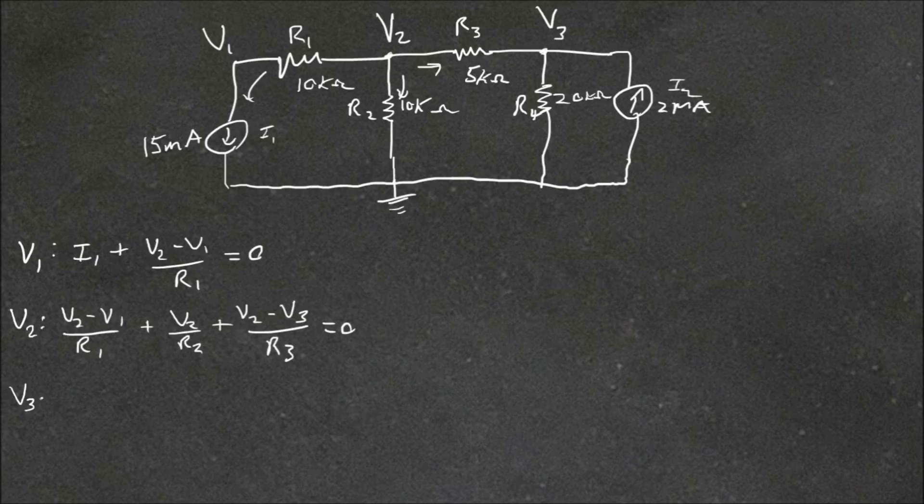And for our final node, V3, the KCL would be our current. We know this current's going up this way. We'll say this one's going down here. And we've already said this one's going this way. So we'd have I1 plus the voltage drop across R4, which is V3 divided by R4, and the voltage drop across R3, which would be V2 minus V3 divided by R3, and this equals 0.